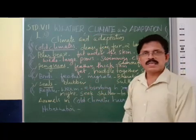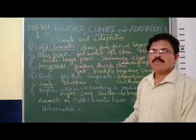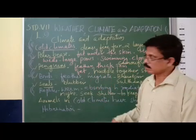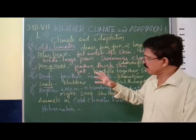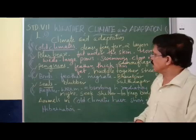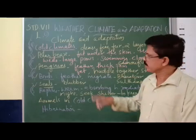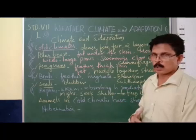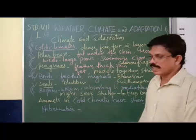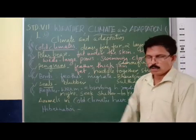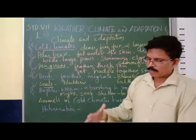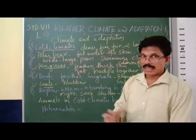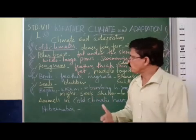The next animal is penguins. Penguins have almost the same adaptations as polar bears — white color, fat under the skin. But there are some differences. Unlike polar bears, penguins have feathers and thick skin. The feathers, thick skin, and fat under the skin all act as insulators and protect the body. Another important feature is that penguins huddle together — they sit and move together — which creates more warmth in the body.